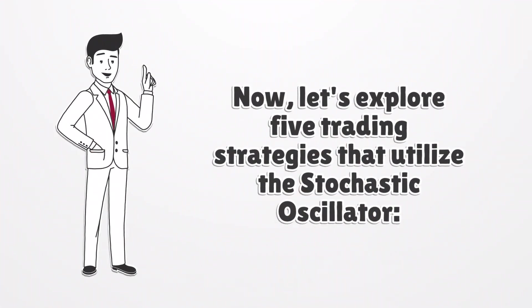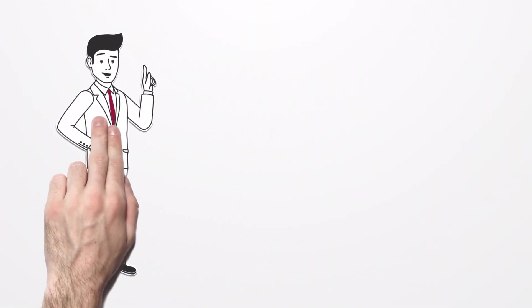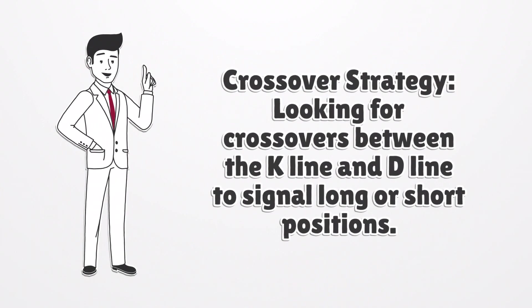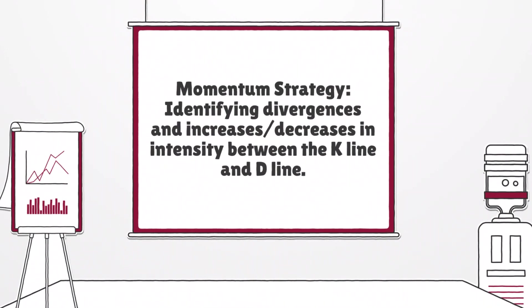Let's explore five trading strategies that utilize the stochastic oscillator. The crossover strategy: you look for crossovers between the K-line and D-line to signal long or short positions. Next, the momentum strategy: you identify divergences and increases or decreases in intensity between the K-line and D-line.